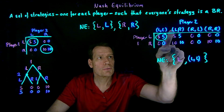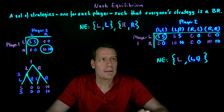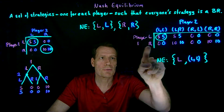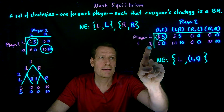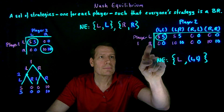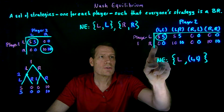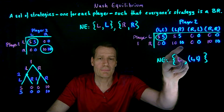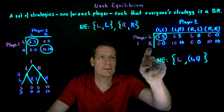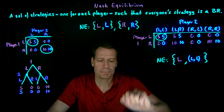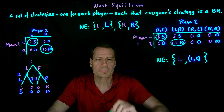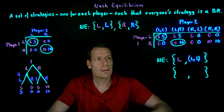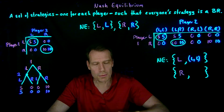If player two plays left-right, player one knows he's in this column and chooses between five and ten — ten is better, so right is the best response. If player one goes right, player two knows she's in this row where the highest payoff is ten, and left-right achieves that. So left-right is a best response to right, and right is a best response to left-right. We found another Nash equilibrium: player one plays right, player two plays left-right.